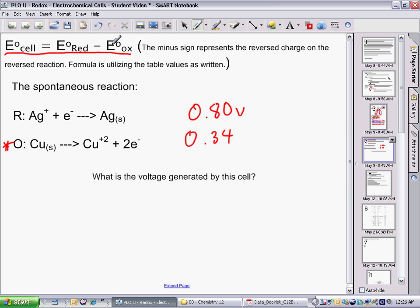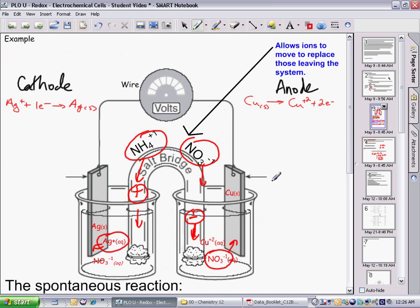In this formula, the negative sign takes care of that reversal. So E°cell is equal to E°red minus E°ox, which is equal to 0.80 minus 0.34 volts, equals 0.46 volts. So this particular cell with these two half reactions should have a potential energy of 0.46 volts overall.